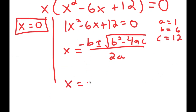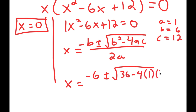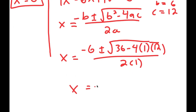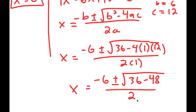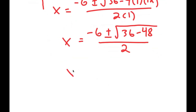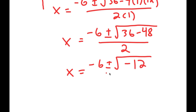Plugging these values into the quadratic formula, I get negative 6 plus or minus the square root of b², which is 6² = 36, minus 4 times a (which is 1) times c (which is 12), all over 2a, so 2 times 1. This equals negative 6 plus or minus the square root of 36 minus 48, over 2. And 36 minus 48 is negative 12, so I have the square root of negative 12 over 2.